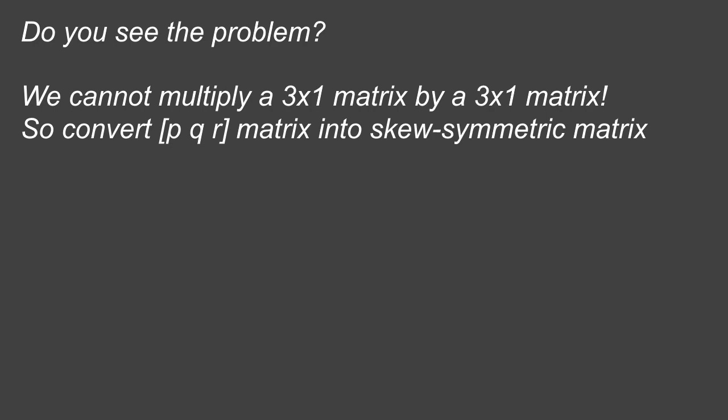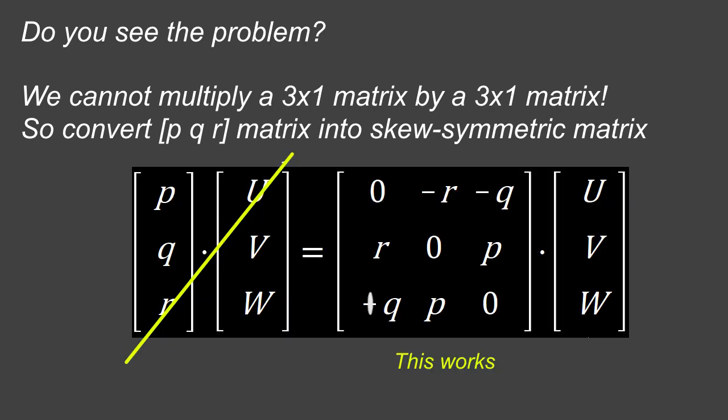But you see the problem here: we cannot multiply a 3 by 1 by a 3 by 1, so we have to convert the P, Q, R matrix into a skew symmetric matrix. The operation on the left-hand side is not possible because you cannot multiply two matrices like that, so you have to convert it into an n by n matrix and then multiply it by u, v, w.